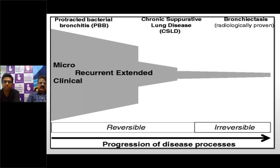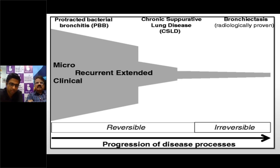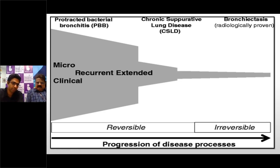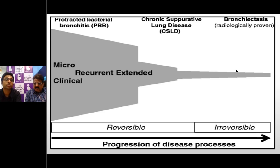There is a spectrum: PBB → chronic suppurative lung disease → bronchiectasis. PBB is the origin of the problem. Whenever you have a microbiologically confirmed chronic moist cough, treat — because the window for reversibility is very good at this stage. A two-week course of antibiotics prevents chronic suppurative lung disease. Chronic suppurative lung disease is essentially bronchiectasis without radiological features. If untreated, with moist cough persisting beyond six months, the child will develop radiological evidence of bronchiectasis, which is irreversible.